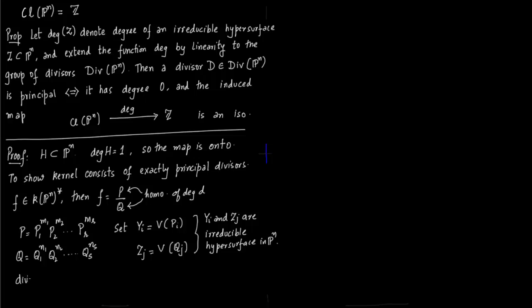So what is the divisor of F? The divisor of F is sum from i=1 to R of M_i times the corresponding hypersurface Y_i, minus—so we have just taken the numerator minus the denominator. We have taken into account all the hypersurfaces corresponding to the irreducible polynomials.